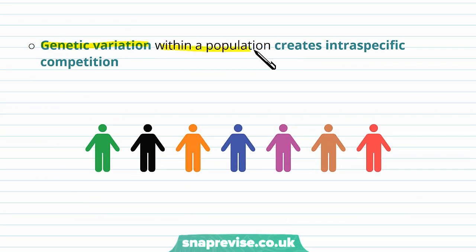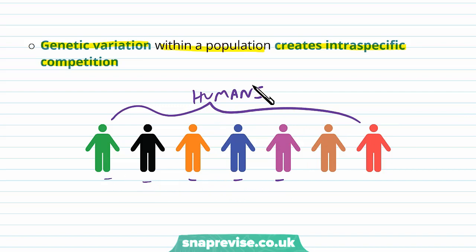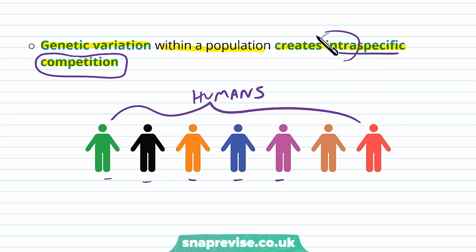Genetic variation within a population creates intraspecific competition. We're all part of the same species, but within us we have variations in our alleles, and so this is intraspecific competition. When we say competition, it's because we have certain features that are better than others — some people are better at running, some people are better at finding food, etc. So it's intraspecific competition.